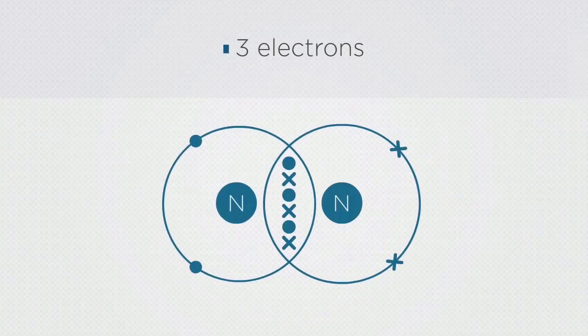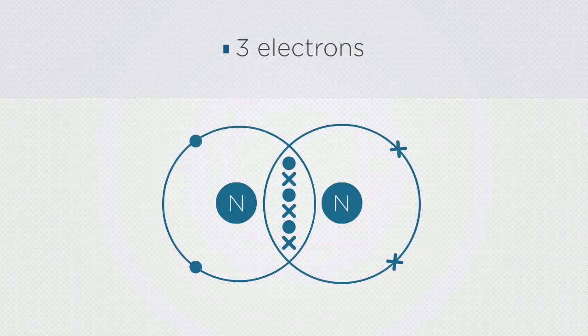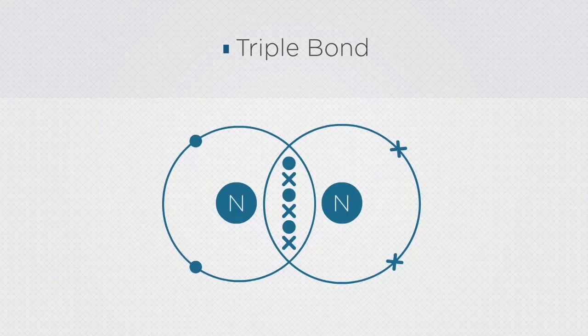You should see that there are three shared pairs of electrons in the overlap of the shells. This is called a triple bond. You should also notice that this example fulfils the octet rule.